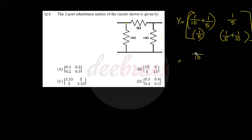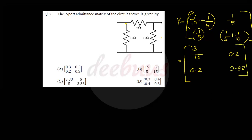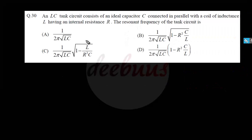Computing the values: 1/10 plus 2/10 equals 3/10, which is 0.33; and 1/5 equals 0.2. So the admittance matrix Y equals [[0.3, -0.2], [-0.2, 0.3]].